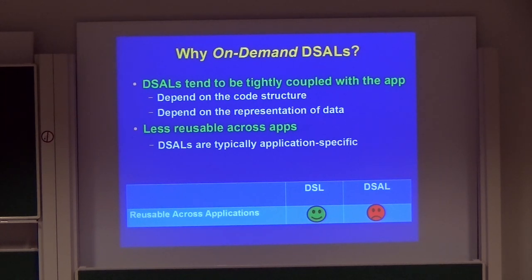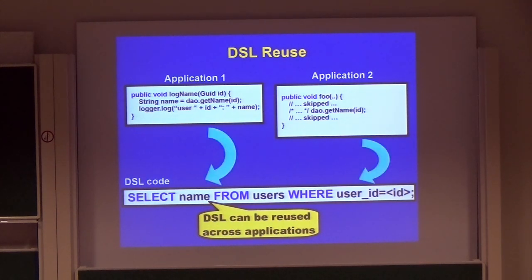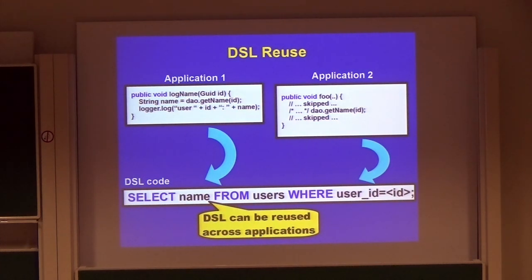Let me demonstrate the discussion. Here is a typical use of a DSL — in that case it is the application that depends on the DSL. Note that nothing in this SQL statement contains data specific to a particular application; it is the application that decides when to use the DSL and provides it the data it needs. Therefore, it can be relatively easy to use the same DSL in a different application.